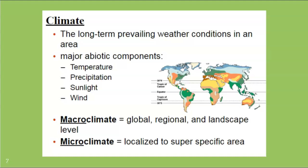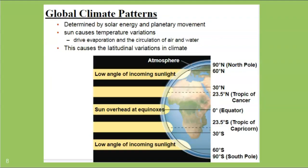Overall global climate patterns are mostly determined by the sun, which causes the main temperature variations and latitudinal differences. It's hottest near the equator because the sun is more or less overhead for most of the year. As you move toward the north or south pole, the sun is overhead during less of the day and less of the year, causing much bigger temperature fluctuations and bigger variation in daytime and nighttime hours between summer and winter.